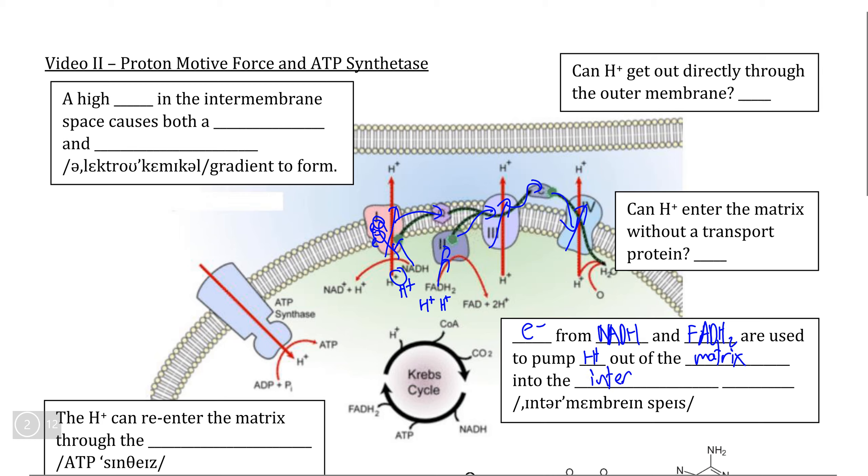This is what we call the mitochondrial intermembrane space, referring to the fact that it is between the outer and inner membranes.